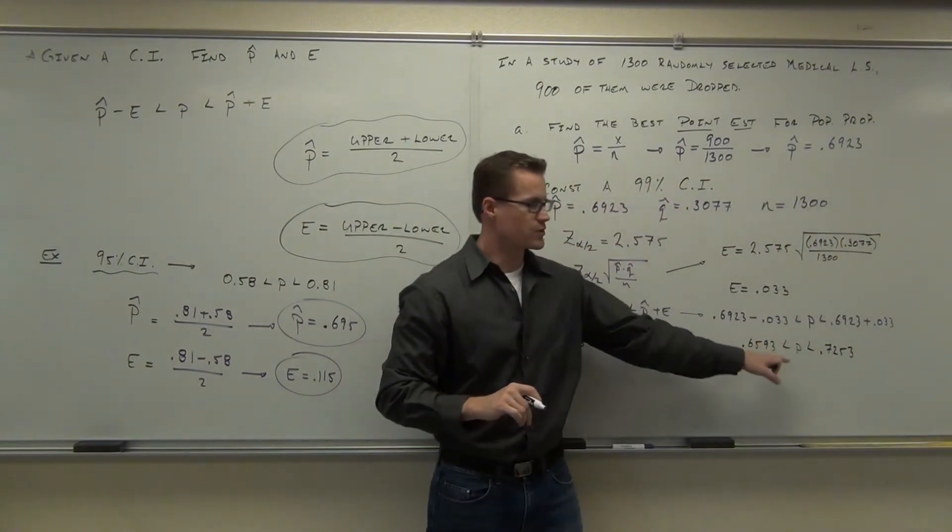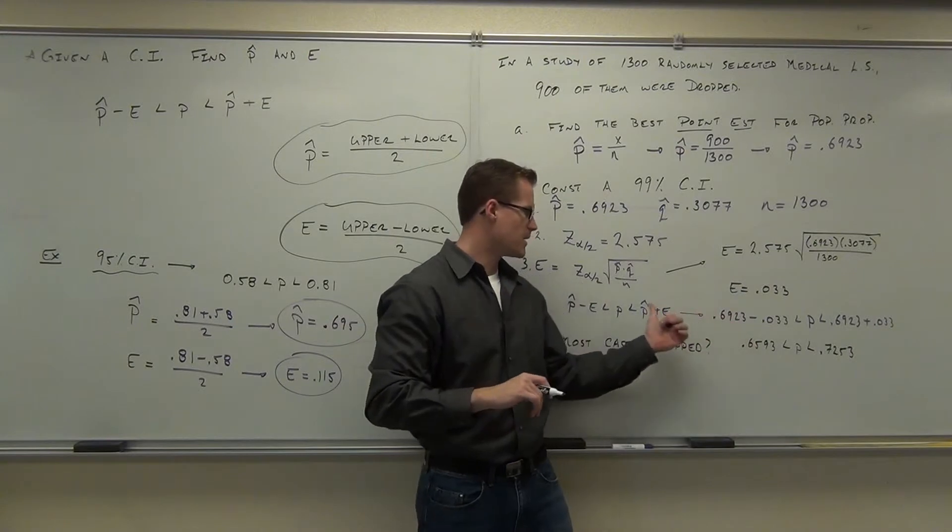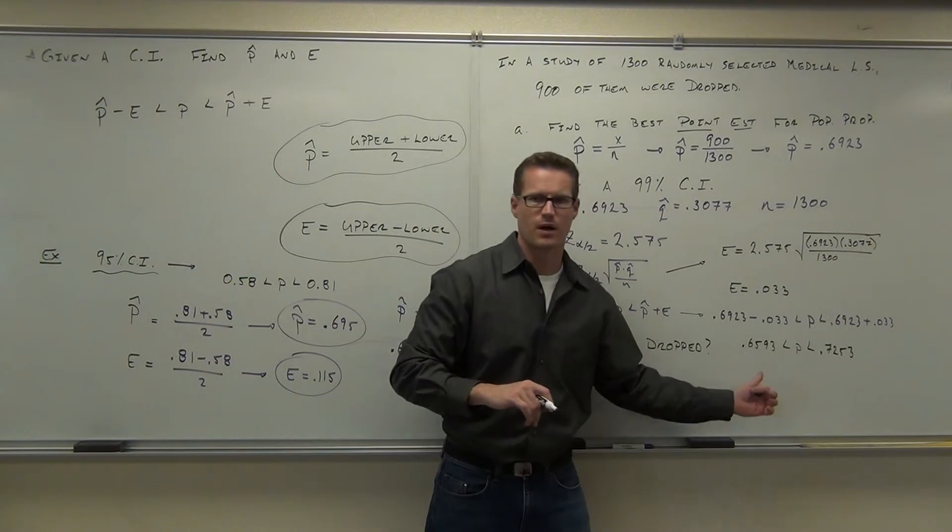Folks, give me a little head nod if you're okay at getting those numbers. You're taking your p hat plus your e and your p hat minus your e and come up with your range. Here's your upper bound and your lower bound.